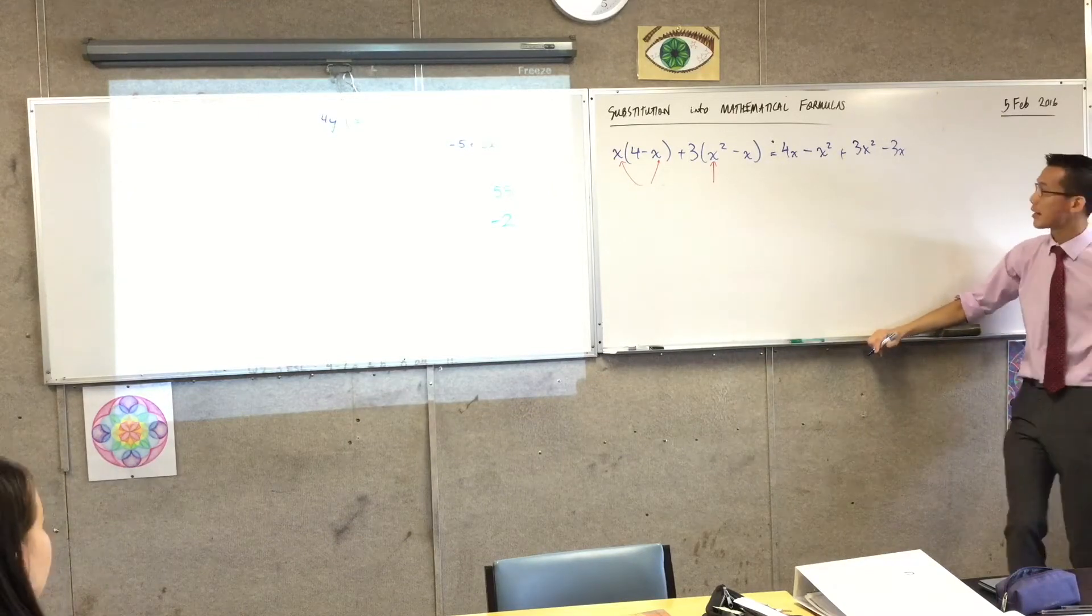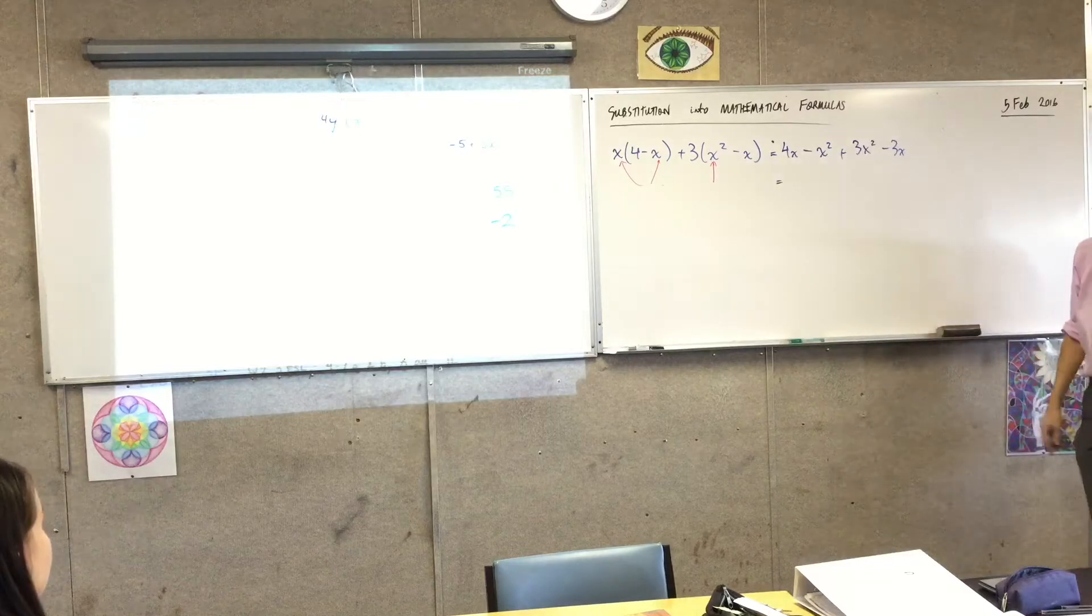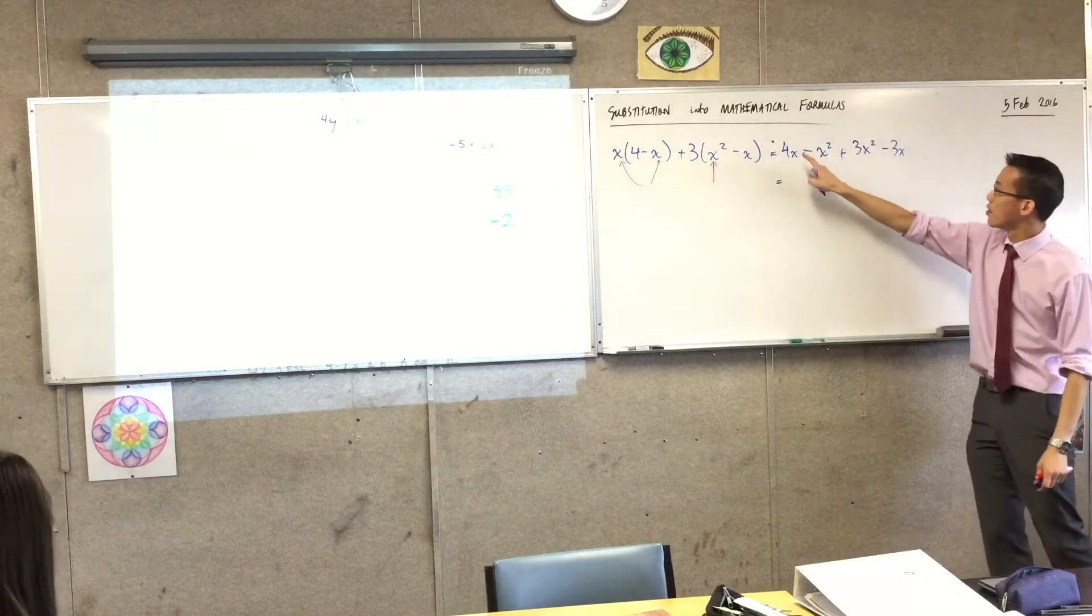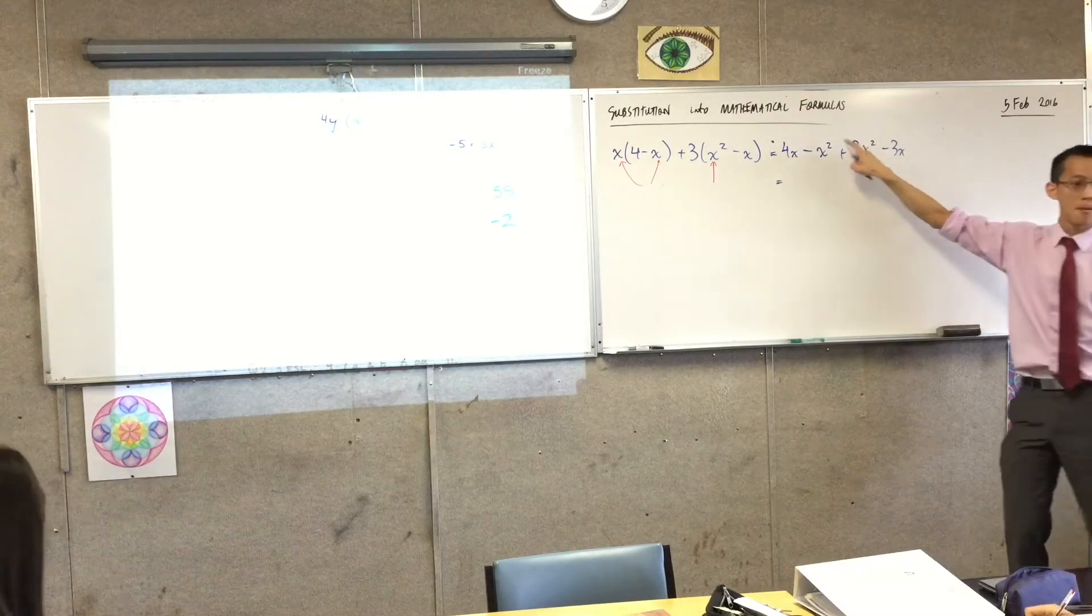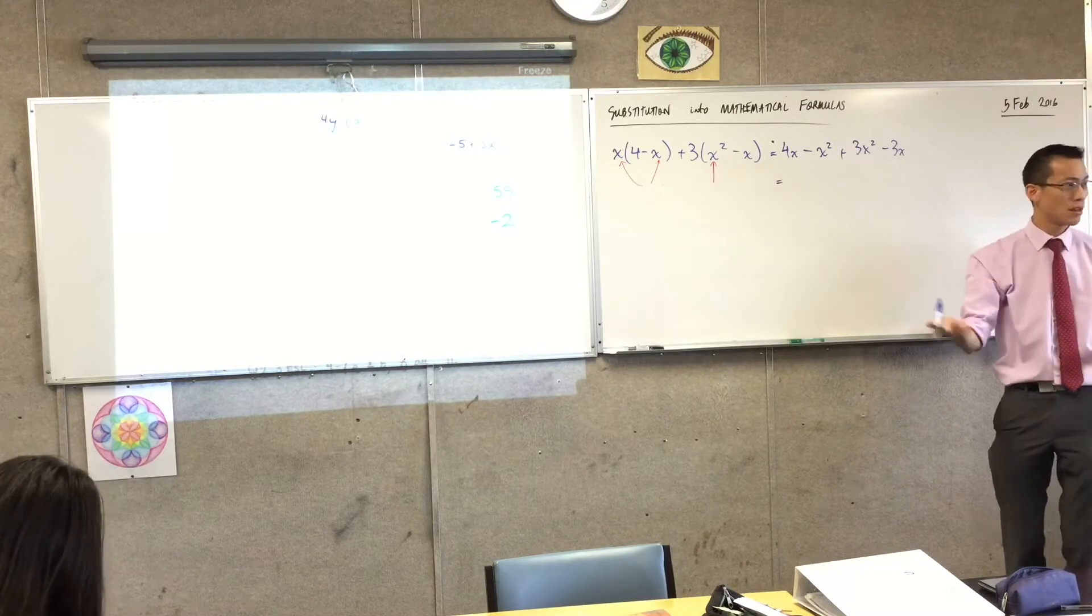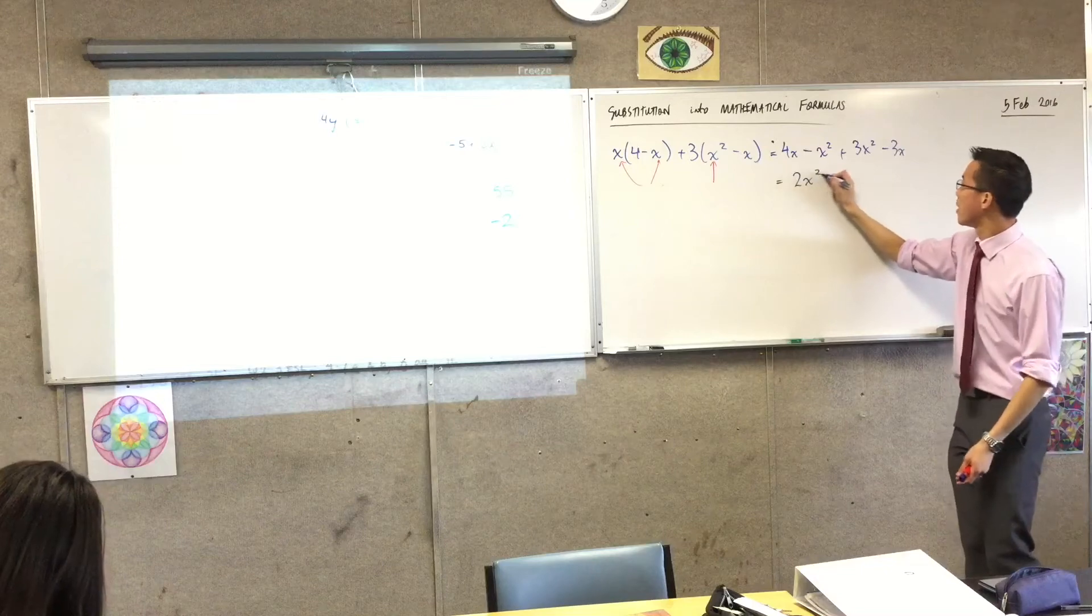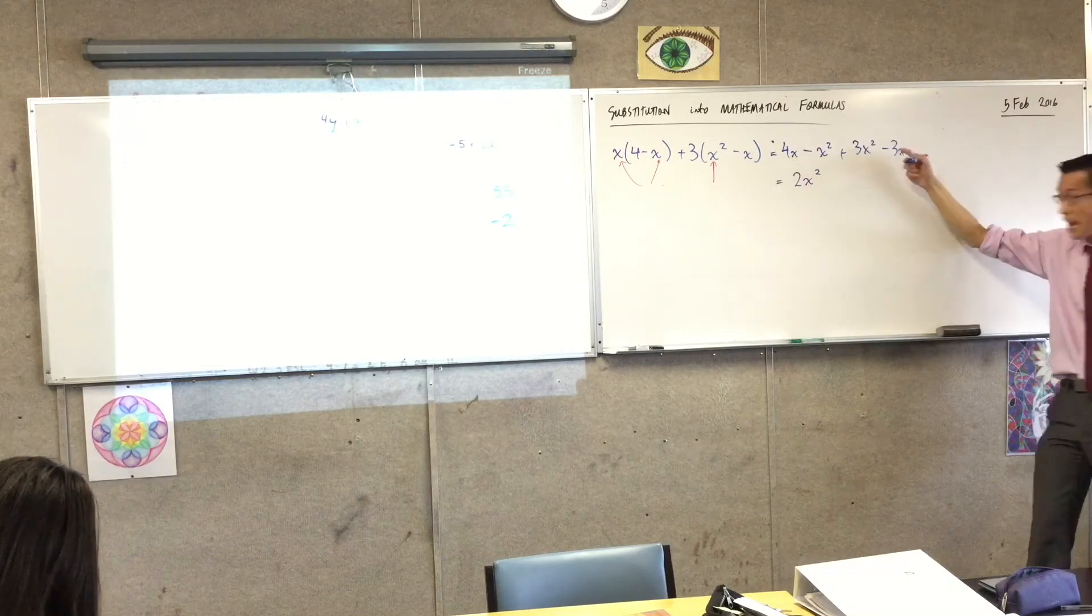Yeah, looking good. So in fact, it looks like I can combine a couple of things here. Minus x squared plus 3x squared, 3 minus 1, 3 minus 1 is 2. And 4x minus 3x? x.